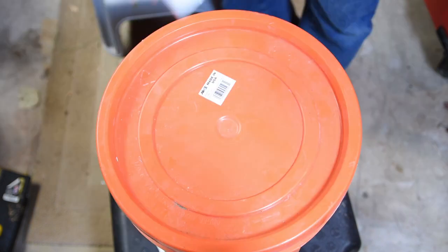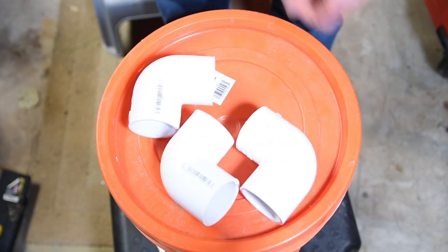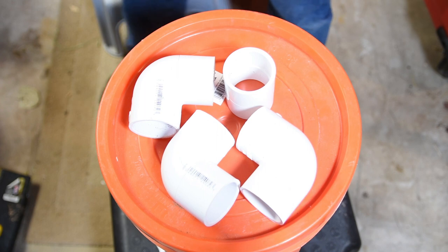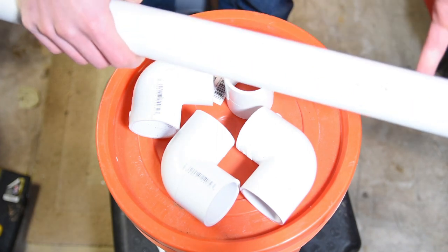All the PVC parts are 1.5 inch. You're going to need three 90-degree elbows, a coupler, and some PVC pipe. You don't need much, and you might be able to find the scraps at the restore.